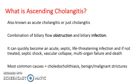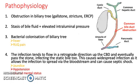The most common causes are choledocholithiasis and benign or malignant strictures. Obstruction in the biliary tract leads to stasis of bile fluid and elevated intraluminal pressure. Bacterial colonization of the biliary tract occurs, indicated by fever and right upper quadrant pain. The infection tends to flow in a retrograde direction up the CBD and eventually past the stone, infecting the static bile too.